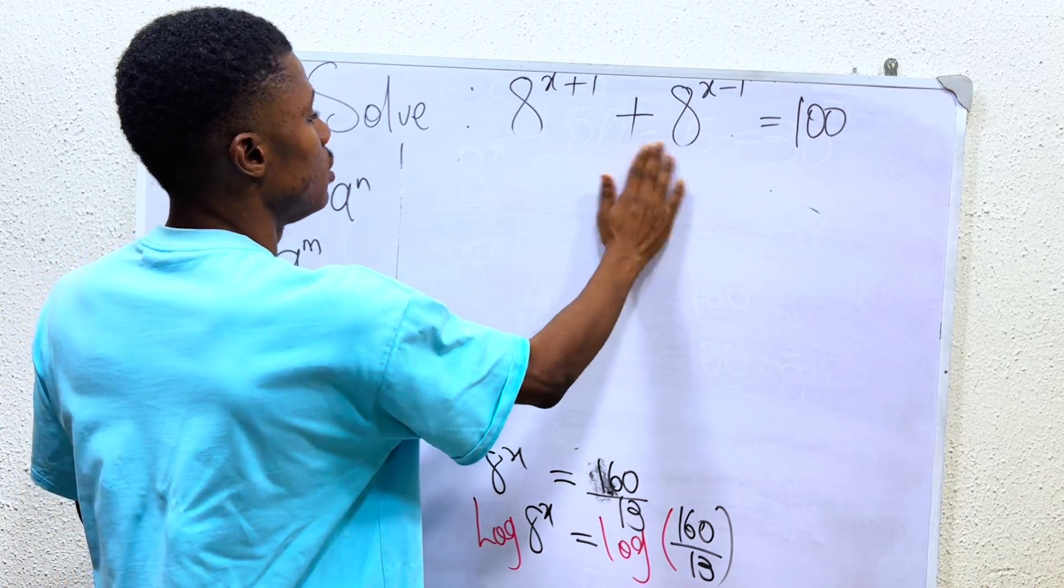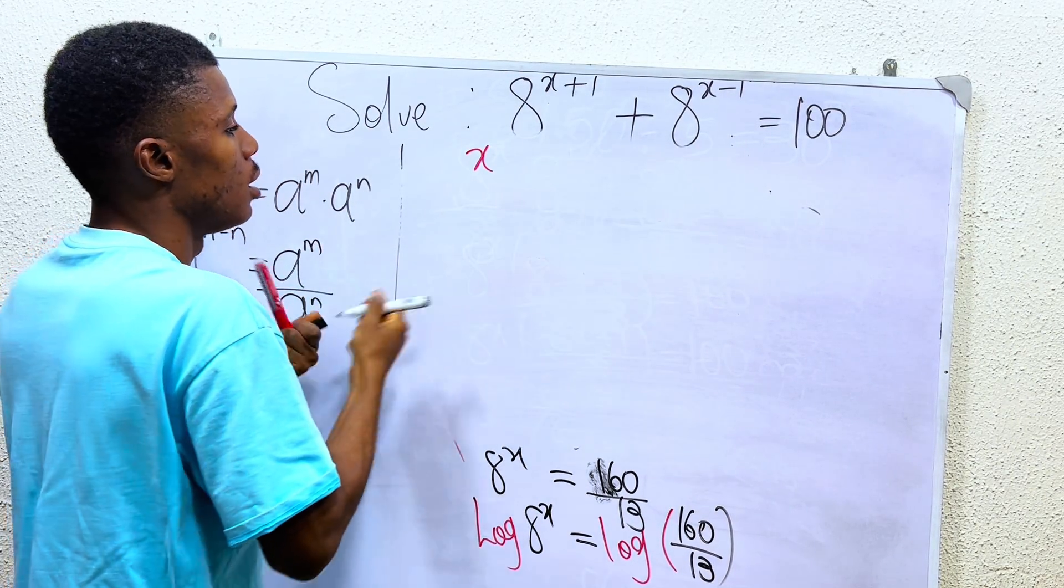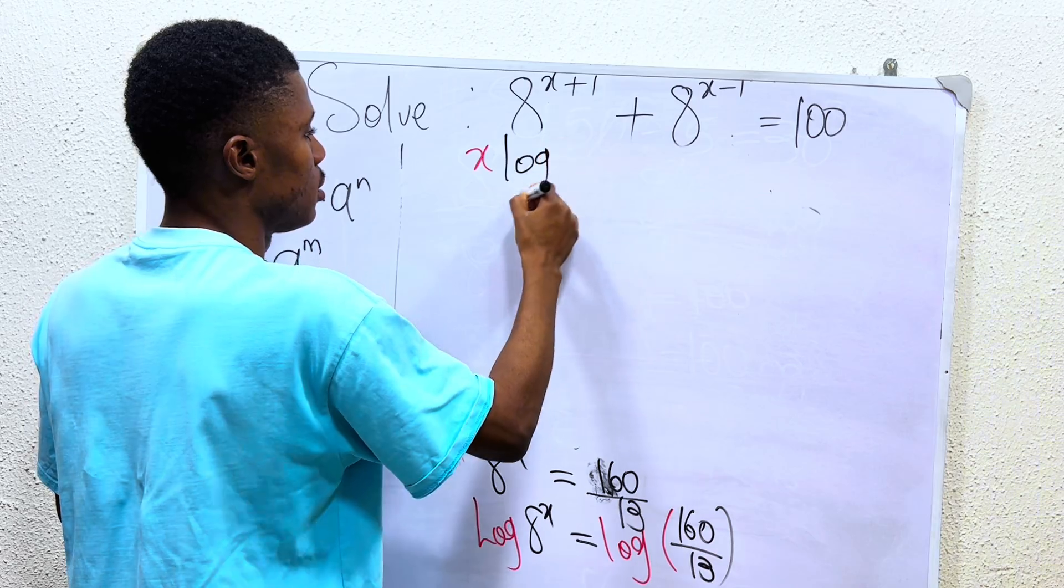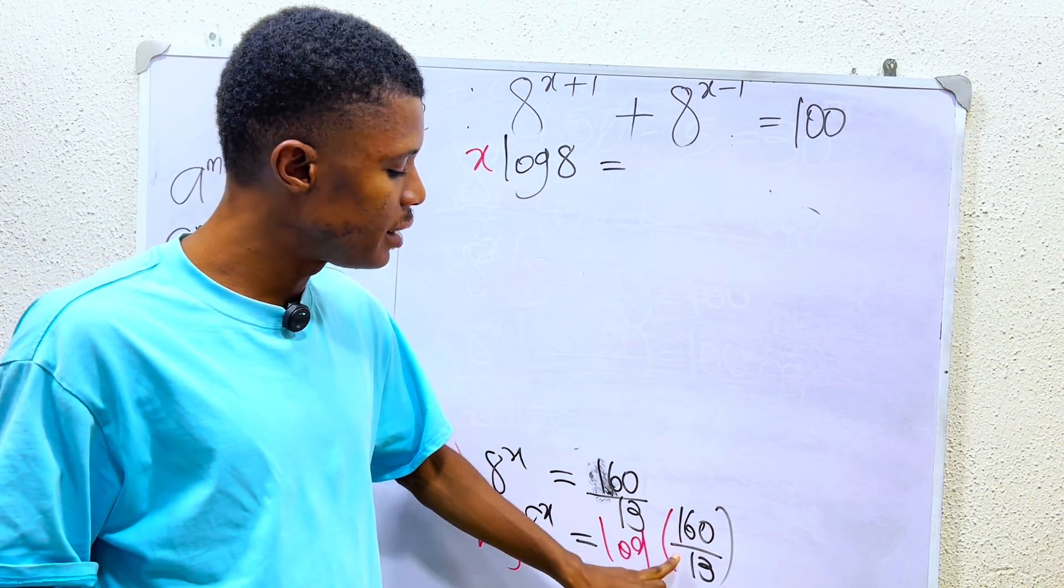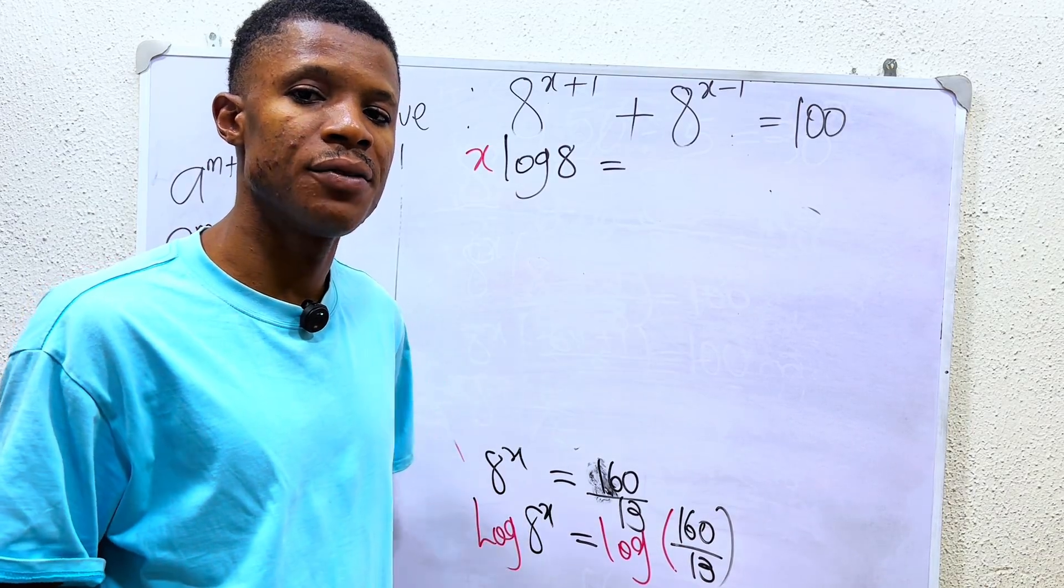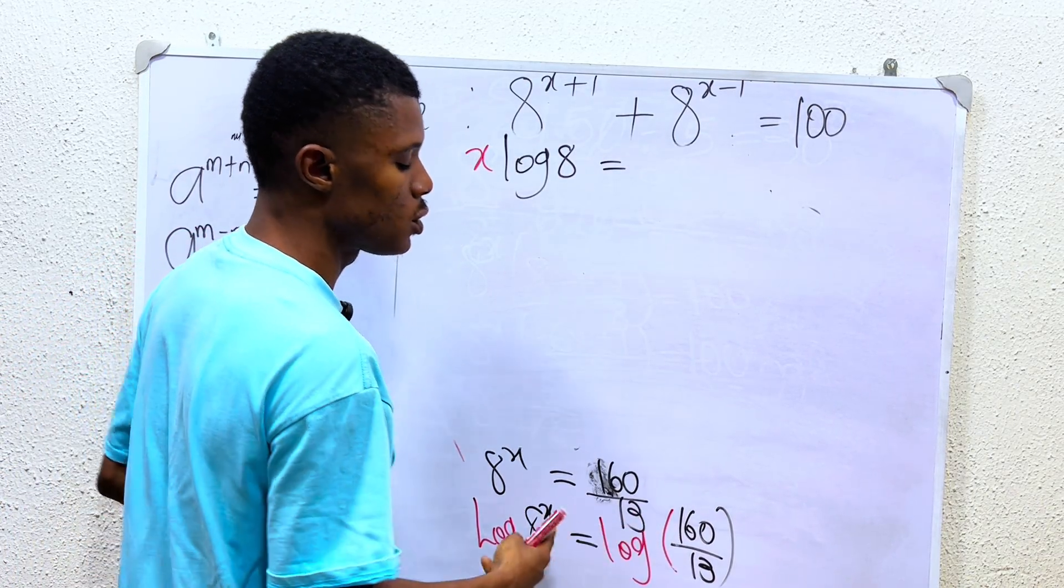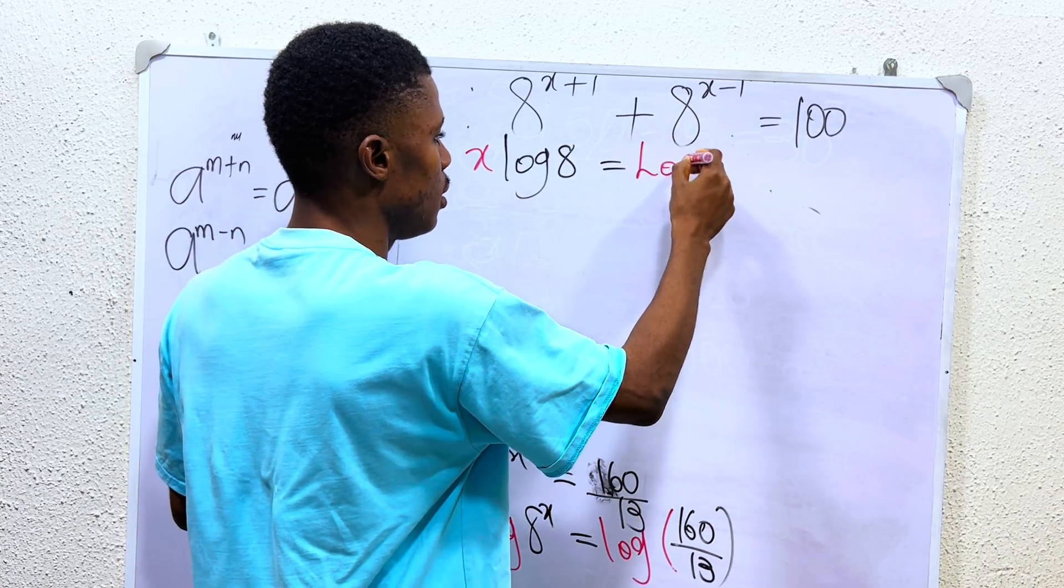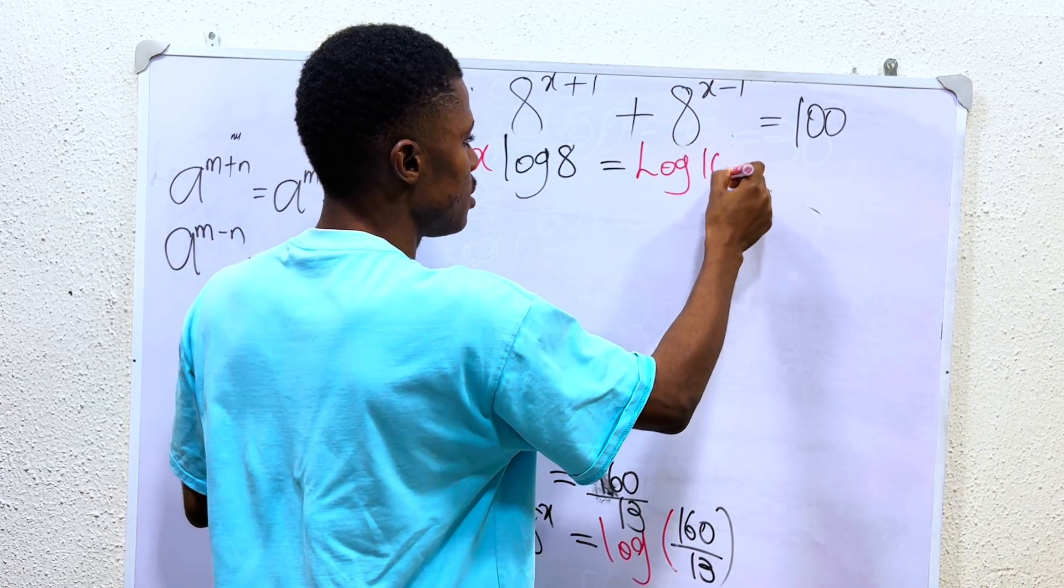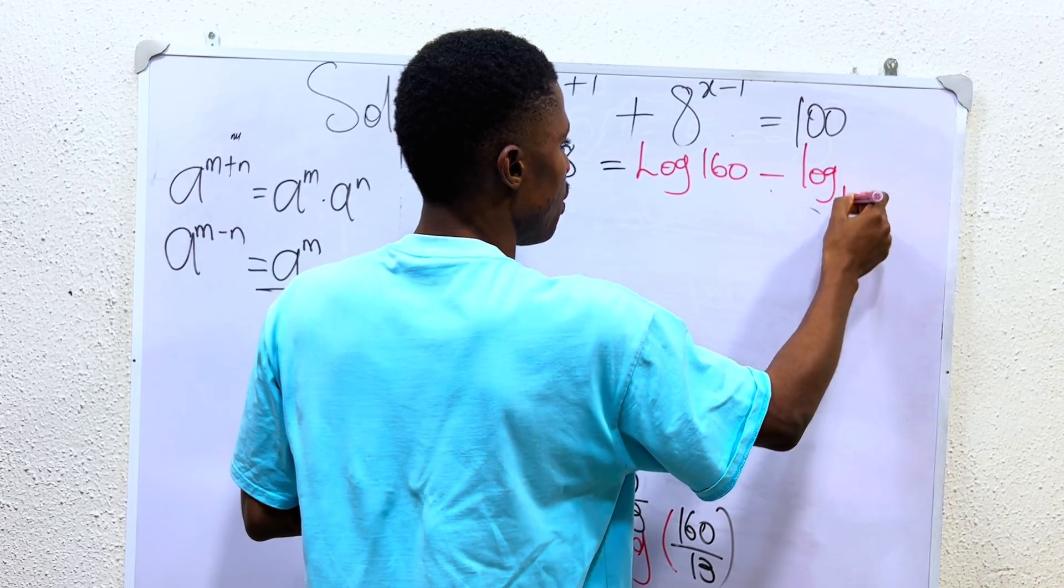I will now have x log 8 equals... In logarithms, whenever we are dividing in common base, what do we have to do? We simply have to subtract in the same log. So here I can have it as log 160 minus log 13.